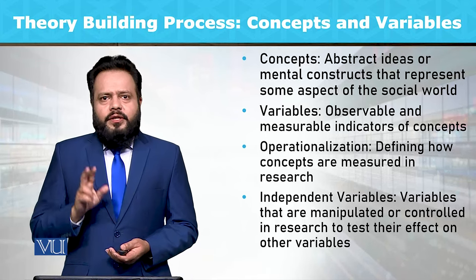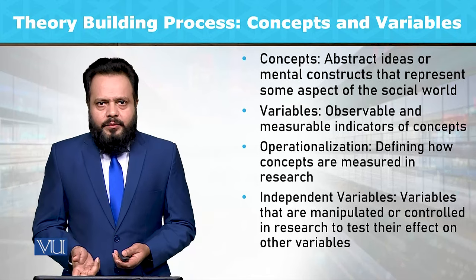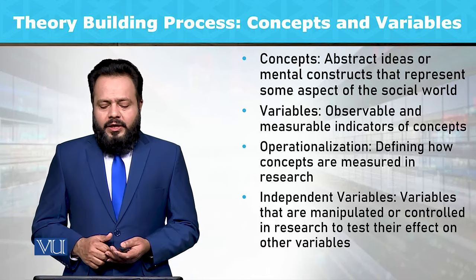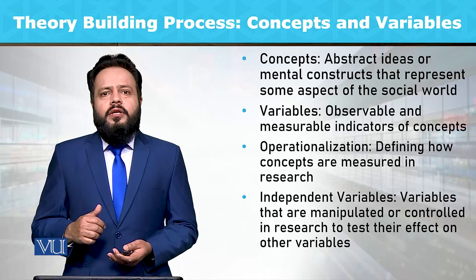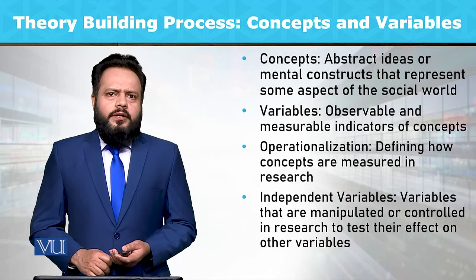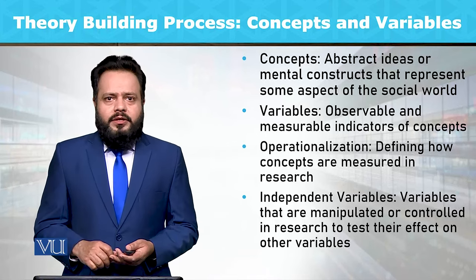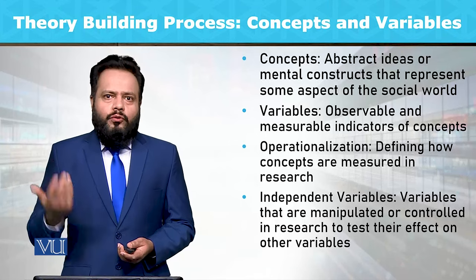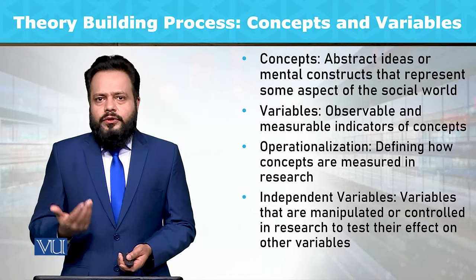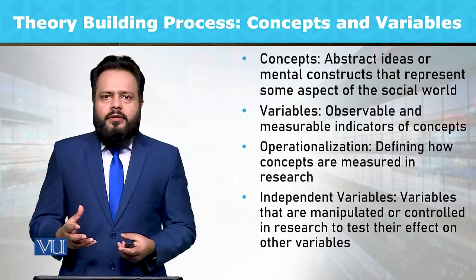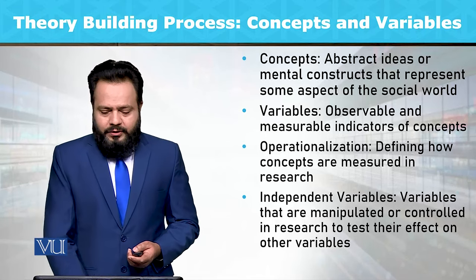Jab hum variables ki baat karte hain, to variables aamuman do tarah ke honge: dependent variable aur independent variable. Independent variables are those that are manipulated or controlled in the research to test their effect on other variables. Misal ke tor pe, hum ne kaha ke happiness ka jo hai woh humare educational attainment ke sath kya talluq hai — kya woh log jo zyada khush rahate hain, unke grades higher hote hain nisbatan un logon ke jo zyada khush nahi rah pate. To happiness ek independent variable ke tor pe is hypothesis mein use karte hue uska effect educational attainment ke upar dekh sakti hain.